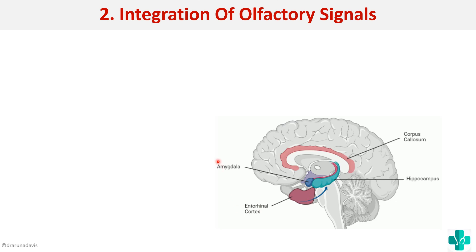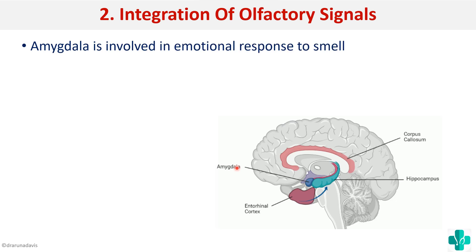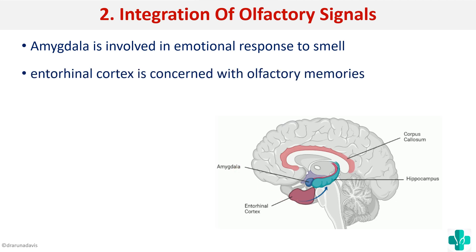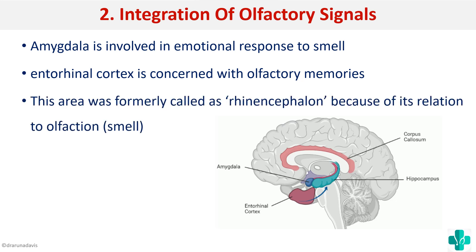The next function is integration of olfactory signals. The major structure involved is the amygdala, which is involved in the emotional response to smell. For example, smelling a favorite dish reminds you of the person who made it — that is an emotional response to smell. The major cortical area involved is the entorhinal cortex, which is concerned with olfactory memories. This is why the limbic system was formerly called rhinencephalon.